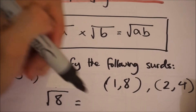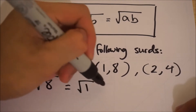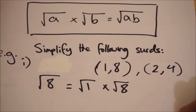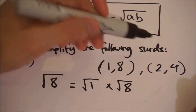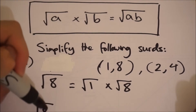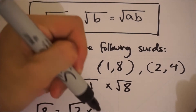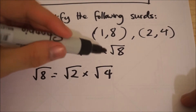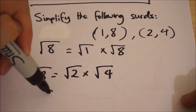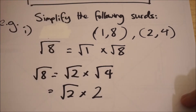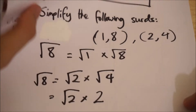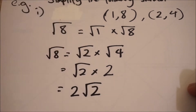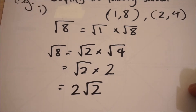We can rewrite this as the square root of 8 equals the square root of 1 multiplied by the square root of 8 — but the square root of 1 is just 1, so that gives us root 8 again, which isn't very interesting. More usefully, the square root of 8 equals the square root of 2 multiplied by the square root of 4. The square root of 4 simplifies to 2, giving us root 2 multiplied by 2, which we write as 2√2.